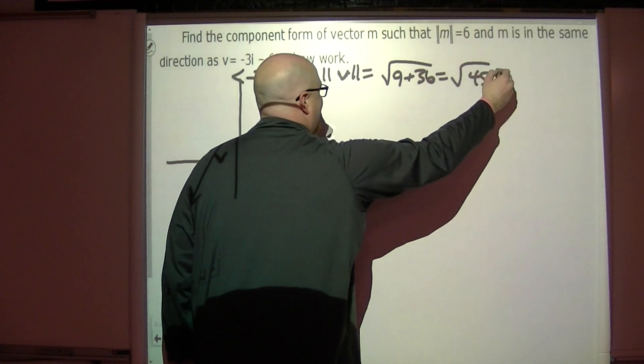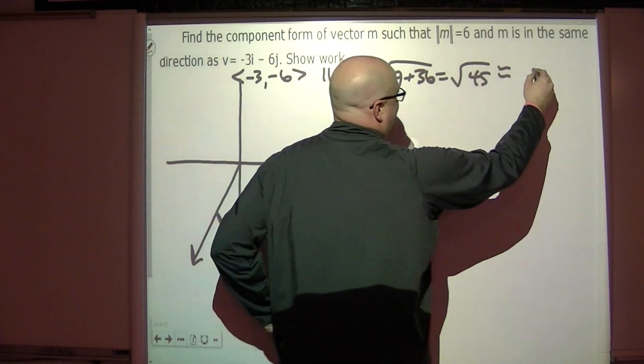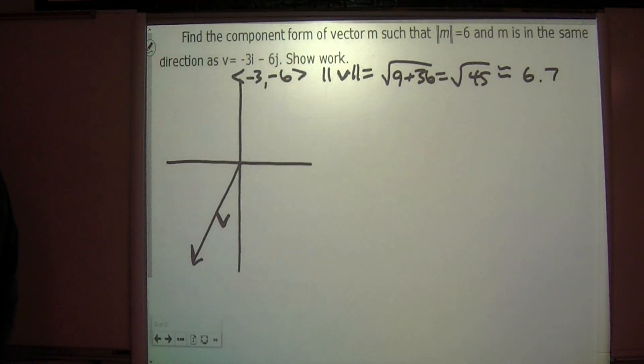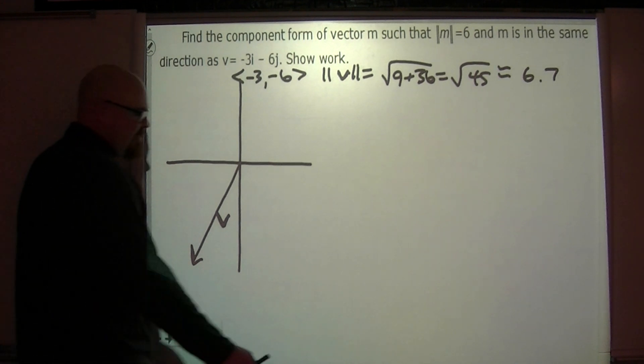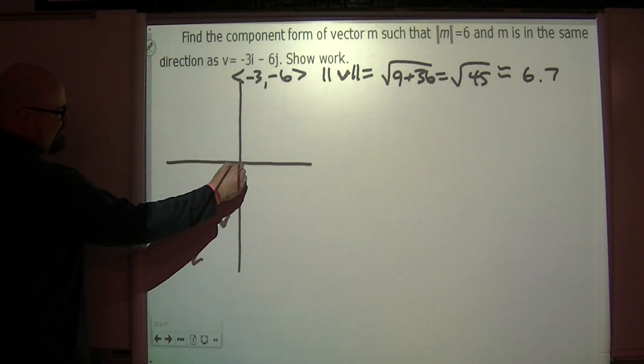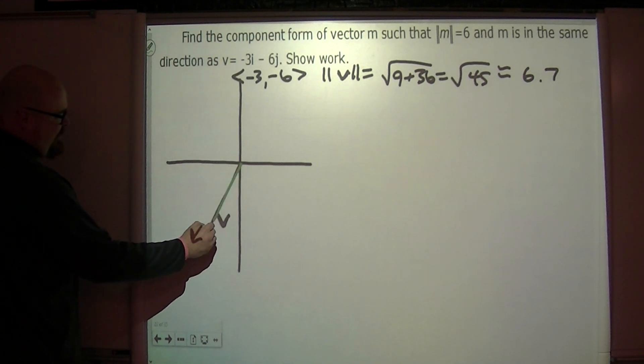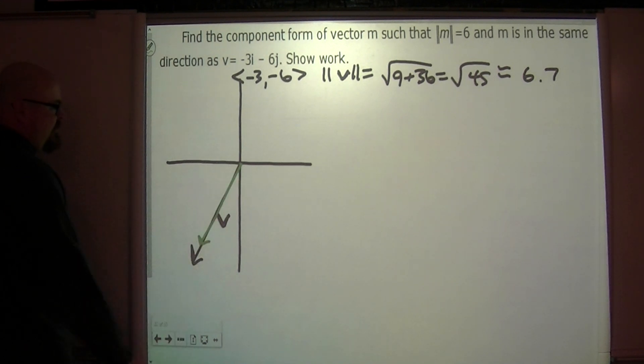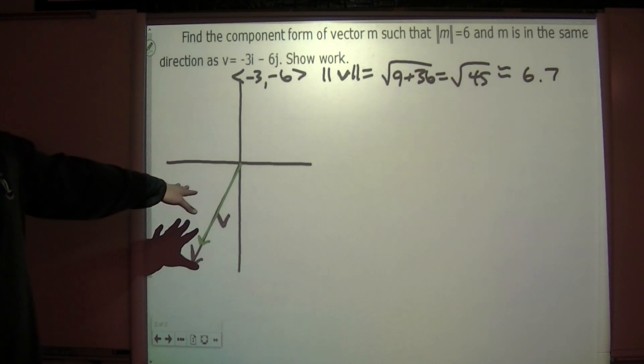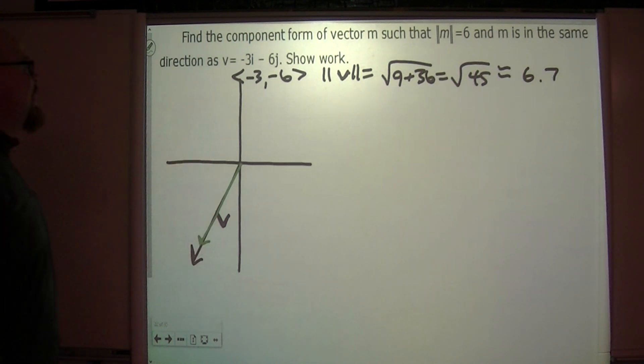Which is approximately 6.7, that's my guess. The magnitude of vector v is 6.7, so what that means is m, which is going in the same direction, is going to be just a little bit short on that.